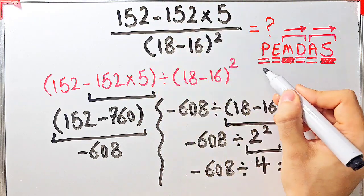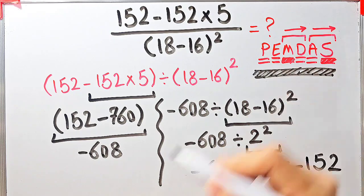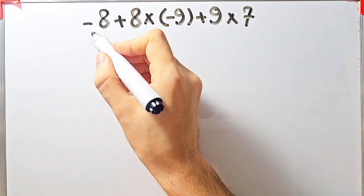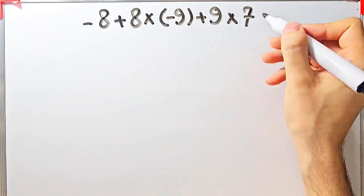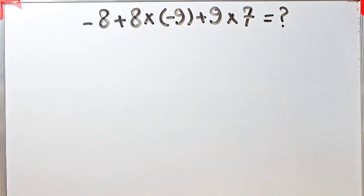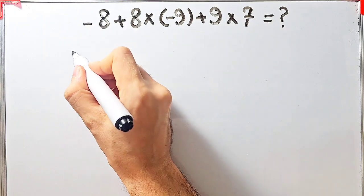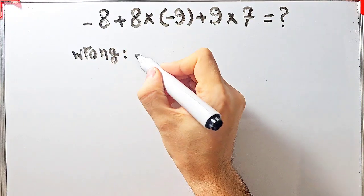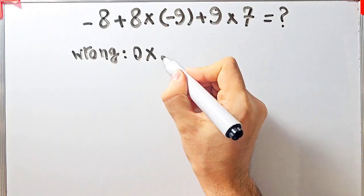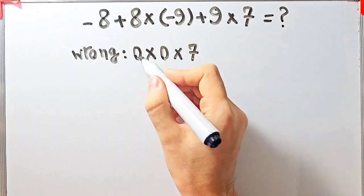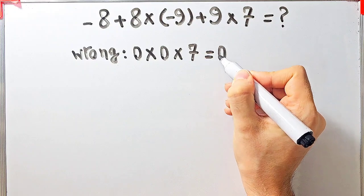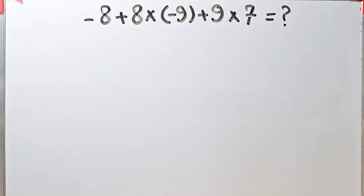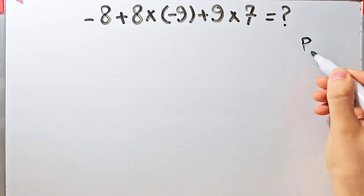If you want to get the right answer you must follow the PEMDAS rule. Let's solve another question: negative 8 plus 8 times negative 9 plus 9, then times 7. Some people solve this question incorrectly — they say negative 8 plus 8 equals 0, then 0 times negative 9 plus 9 equals 0, then 0 times 7 equals 0. They say the final answer equals 0, but this answer is definitely wrong. Let's solve it step by step.